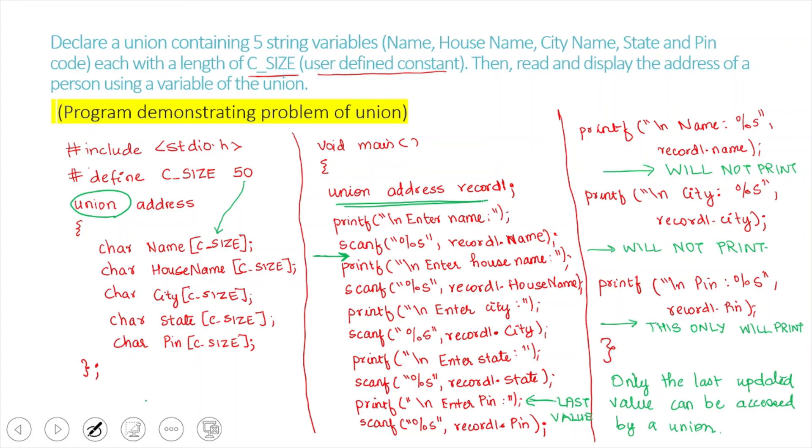So, here we are going to save five string variables: name, house name, city name, state, and pin. So, those are the members inside the union, and all of them we are going to ask the user to enter. So, once the user enters all these values, we must remember that if we ask to print the record name, which was the first member, that will not print properly.